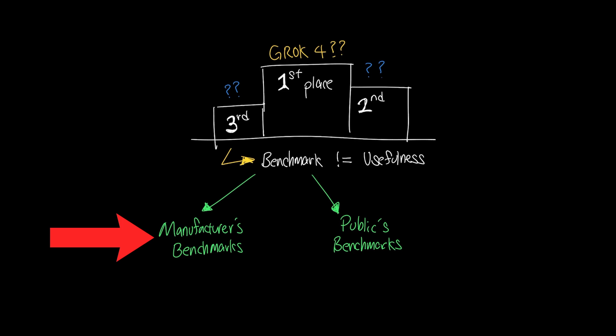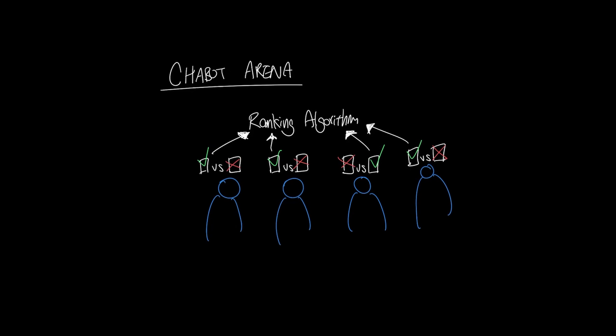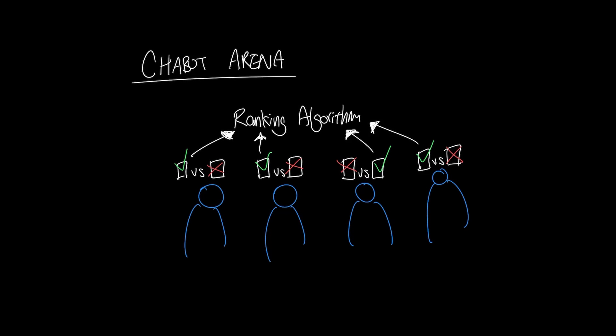So this is where we change from manufacturer's benchmarks to public benchmarks. Public benchmarks are often more real-world problems or even ranking by general public to really highlight which models perform well in the non-academic world. Common public benchmarks like Chatbot Arena, which is a crowdsource comparison of two unlabeled models' results and ranking what response is better.